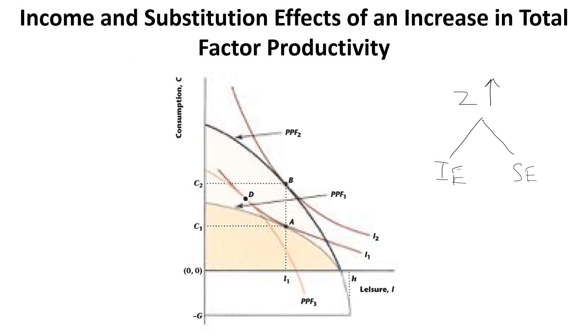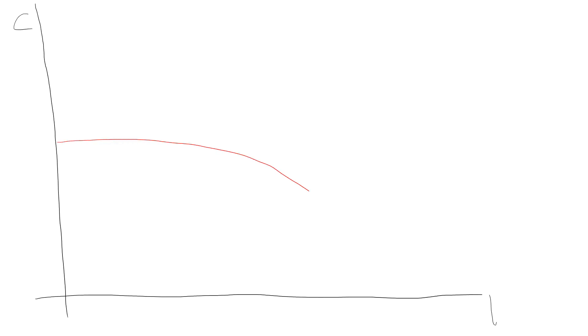This is a rather difficult graph to draw, so in this short recording I am going to show how we can draw it. On the y-axis we have consumption, on the x-axis we have leisure. The first thing I'm going to do is draw a PPF, and then draw a second PPF — notice that the shapes of these two PPFs are not the same.